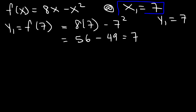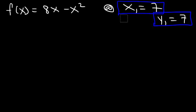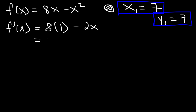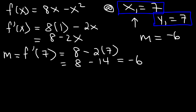Now that we have x and y, all we need to find is m. Let's go ahead and determine the first derivative of the function. f prime of x is going to equal — the derivative of x is 1, the derivative of x squared is 2x — so it's 8 minus 2x. Now let's determine the slope, which is the first derivative evaluated at x equals 7. So it's f prime of 7, which is 8 minus 2 times 7. 2 times 7 is 14, and 8 minus 14 is negative 6. So the slope is equal to negative 6.